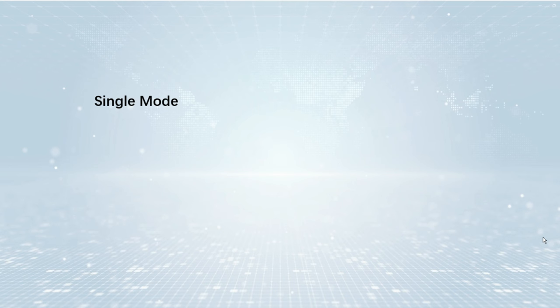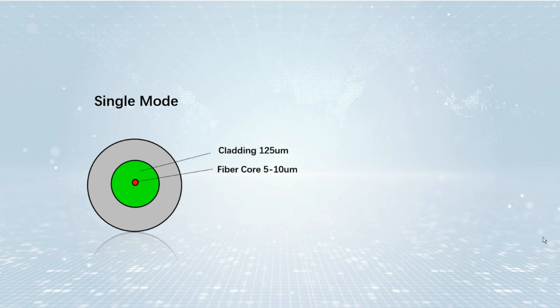Single-mode fiber core diameter is much smaller than multi-mode fiber. Its typical core diameter is 8.5 micrometers or 9.5 micrometers, and the commonly used single-mode fiber wavelength is 1310 nanometers and 1550 nanometers.